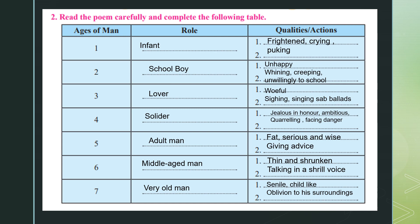Complete the following: there are seven stages as mentioned in the poem. The first is the infant — frightened, crying, and puking. Second is the schoolboy — unhappy and whining to go to school. Third is the lover — woeful, singing sad ballads. Fourth is the soldier — jealous in honor, ambitious, quarrelsome, and facing danger. Fifth is the adult man — fat, serious, wise, and always giving advice. Sixth is the middle-aged man — thin and shrunken, talking in a shrill voice. Seventh is the very old man — childlike, oblivious of his surroundings, and waiting to embrace death.